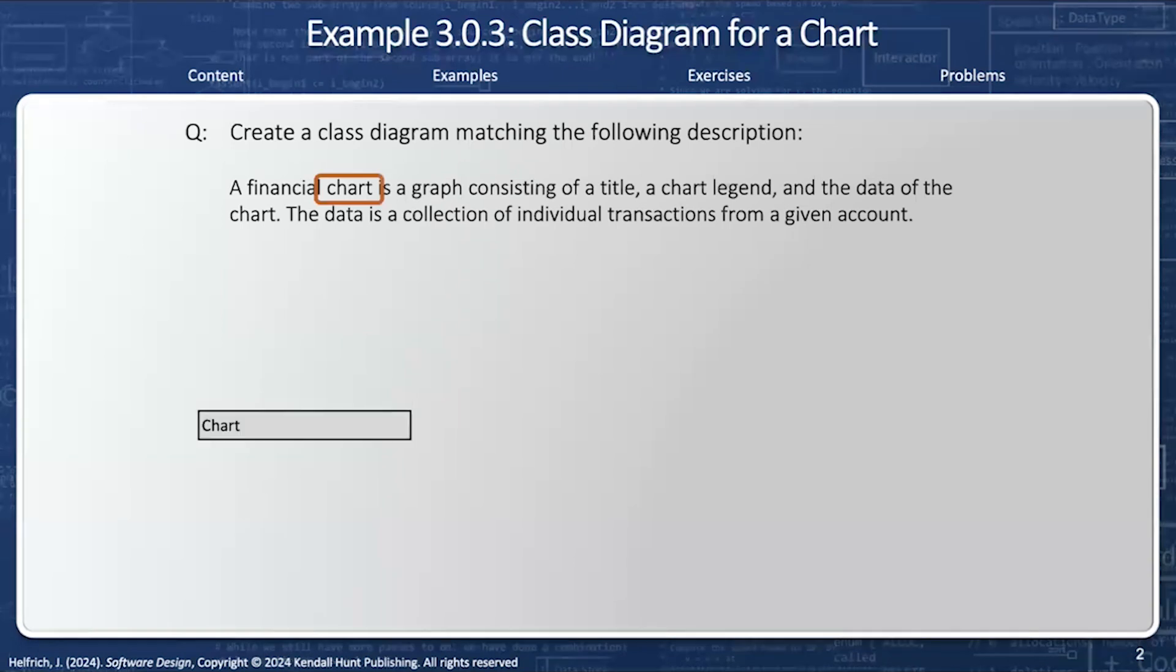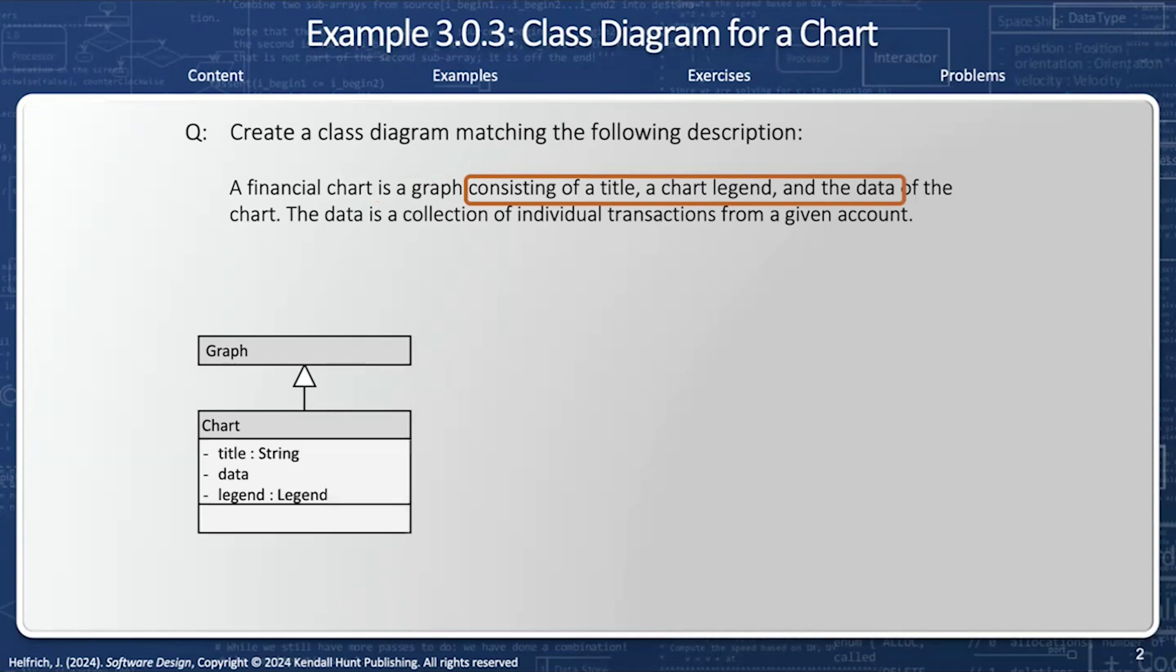So we're going to start with chart, and that's our beginning class. We don't know anything about it right now, but we know it is a graph, so therefore it's derived from a graph. It consists of, in other words, has the attributes of a title, a legend, and data.